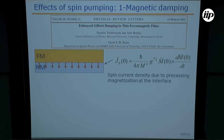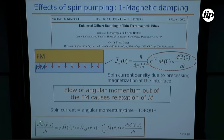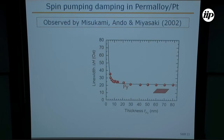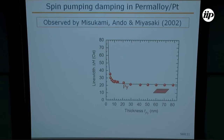Besides proposing the spin current, they proposed that it would produce an increase in the damping of the magnetic system because there is a flow of angular momentum out of the ferromagnetic material. This comes from the Landau-Lifshitz-Gilbert equation. The spin current, which acts as a torque, has the same form as the Gilbert damping expression, so it changes the damping. This had been observed by Mizukami and Ando in 2002.